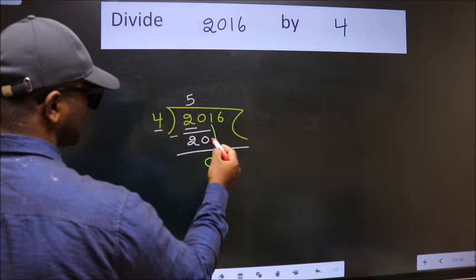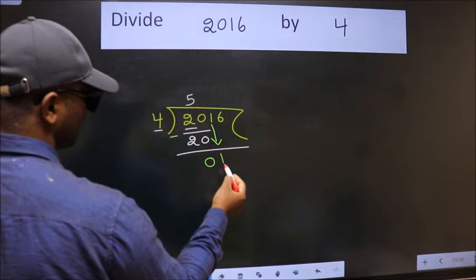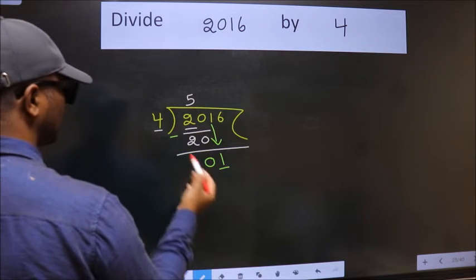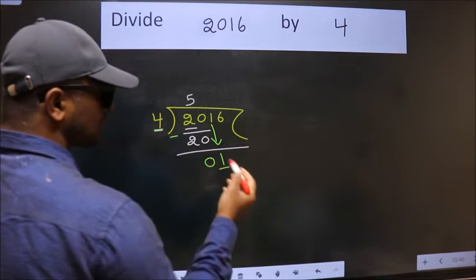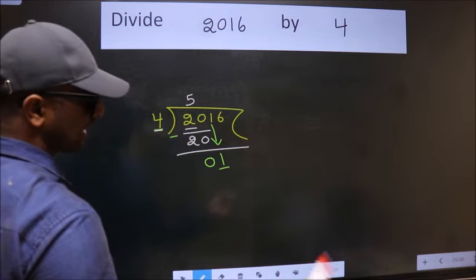After this, bring down the next number. So 1 down. Now here we have 1. Here 4. 1 is smaller than 4, so we should bring down the next number.